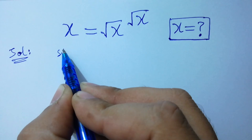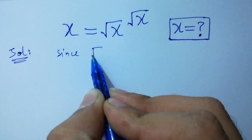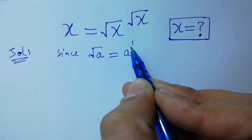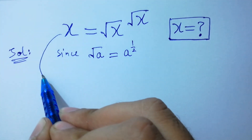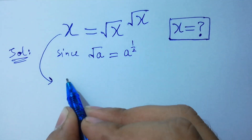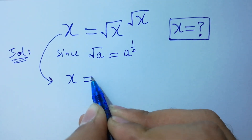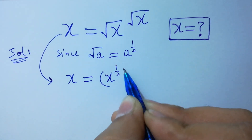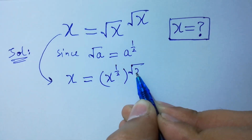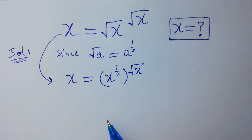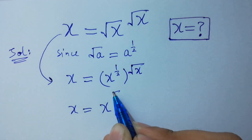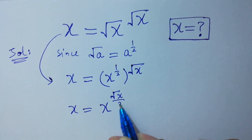Since square root of a equals a to the power 1 over 2, it will be equal to x equals x to the power 1 over 2, to the power square root of x. So x equals x to the power square root of x over 2.